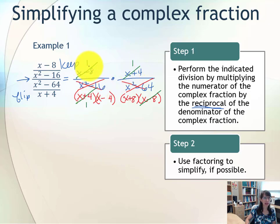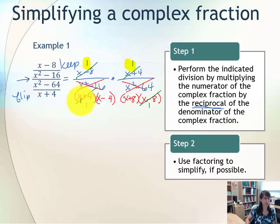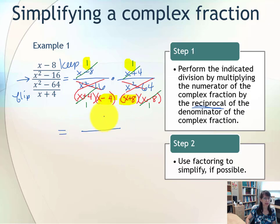The quantity (x − 8) reduced to 1. So anything not crossed out: 1 multiplied by 1 for the numerator, and (x − 4) multiplied by (x + 8) for the denominator. Our final solution is 1 times 1, which is 1 in the numerator, over the quantity (x − 4) times the quantity (x + 8) in the denominator.